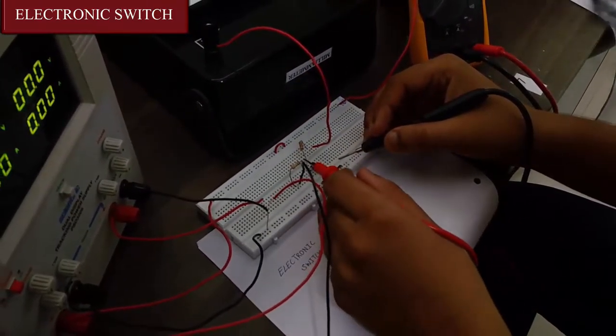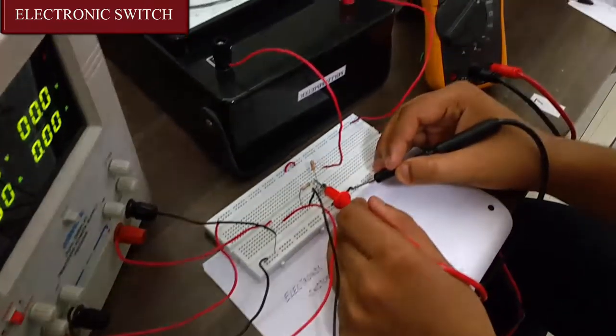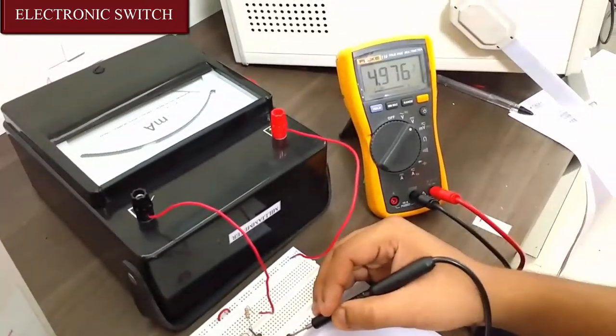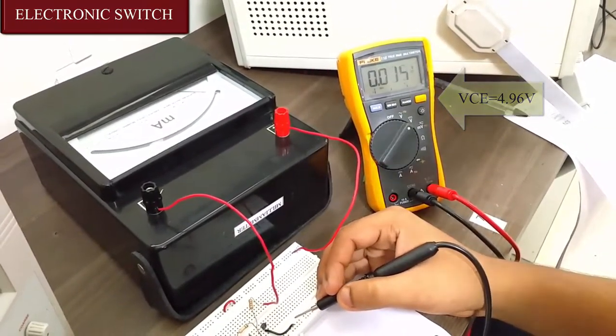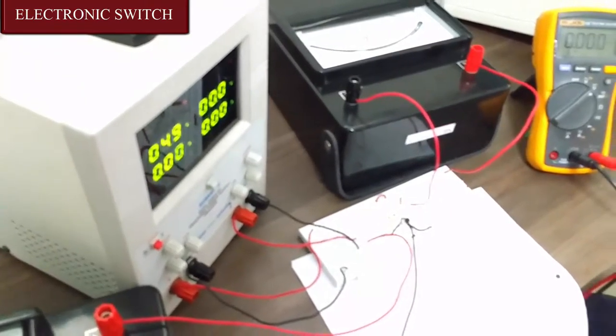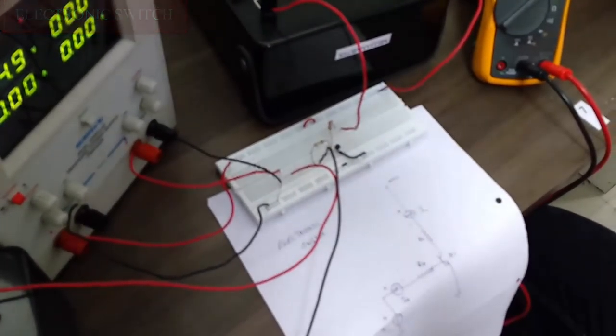Now we are going to check VCE. VCE is 4.96 volts. So that's it for the electronic switch and the observations. Thanks for watching.